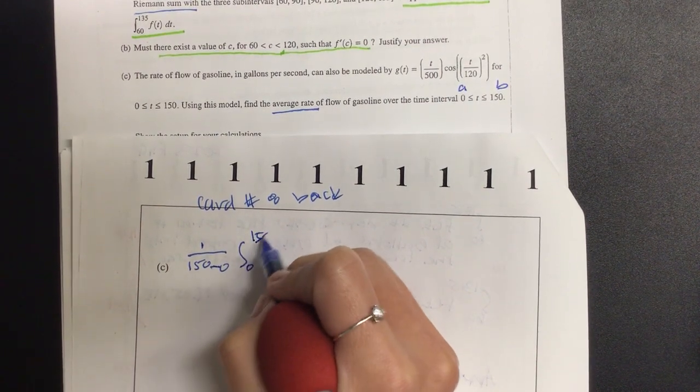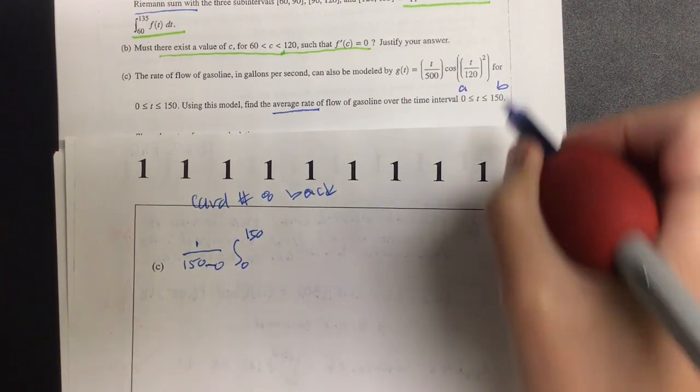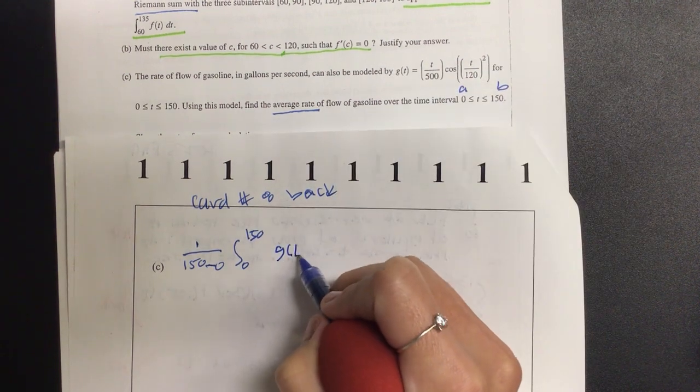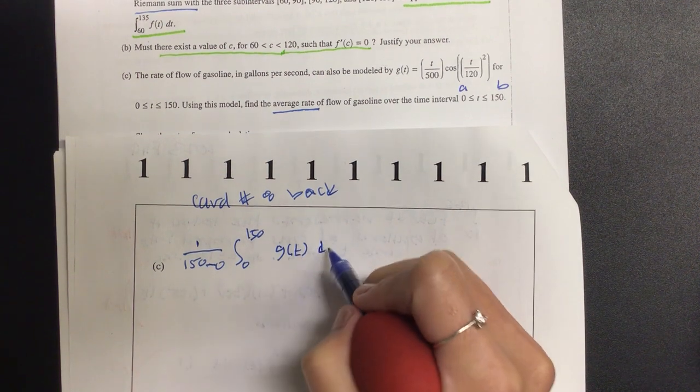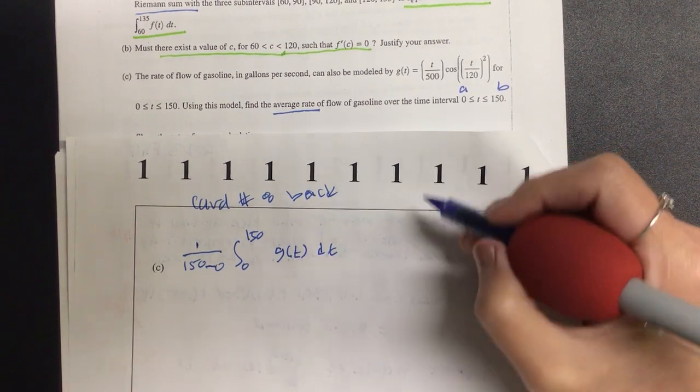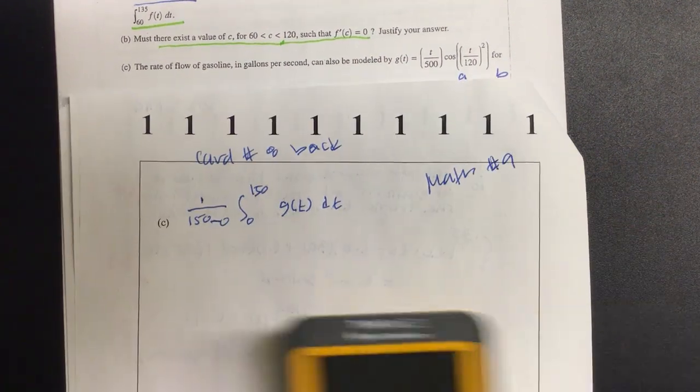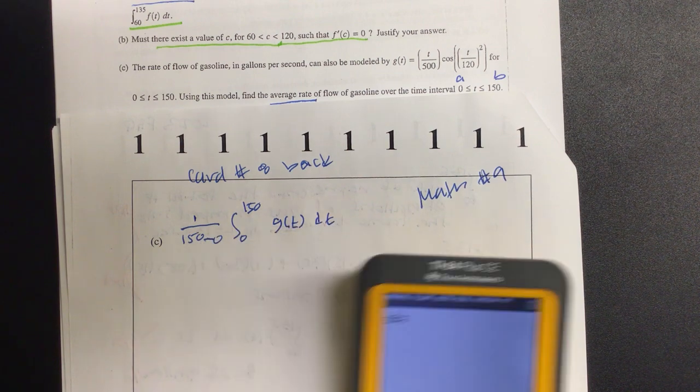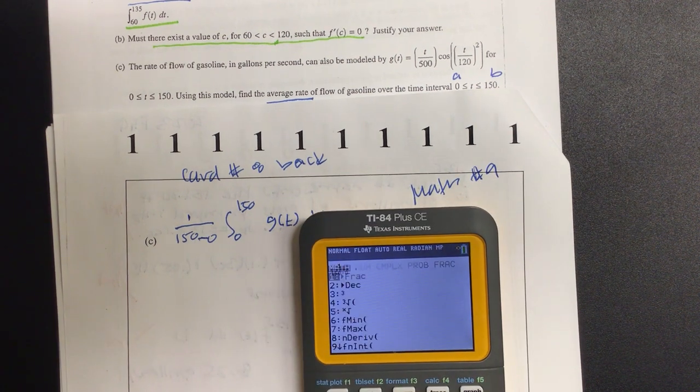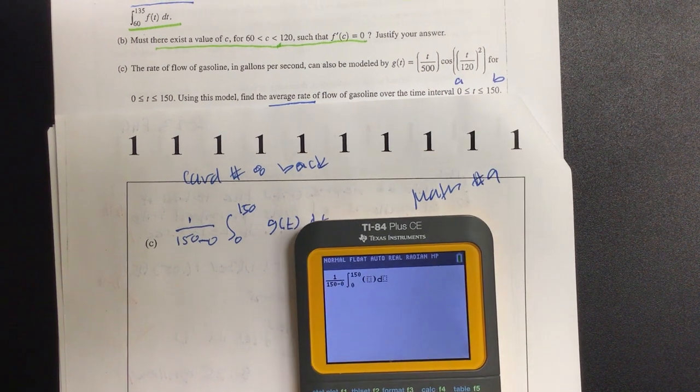And if you remember the average value, make sure your mode is in radian mode on this one. So this is the average value. So card number eight, I'm not going to show, but it was one over B minus A. Who is my B? A comes first, B comes next. 150 minus zero. Integral from zero to 150. And then what's nice about the AP test, because they've already stated the whole complex equation, if you just write G of T, that can just replace the whole thing, just to save time. DT. Now for this one, to get the integral, is it a math nine? Math number nine? Yes. Let's do that.